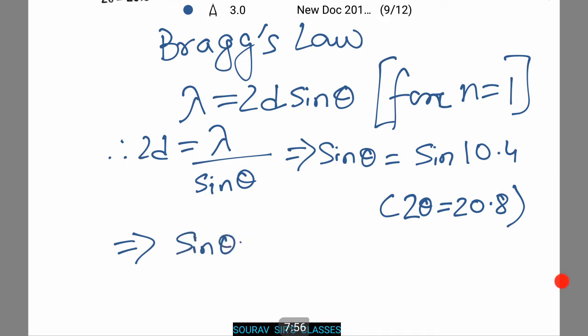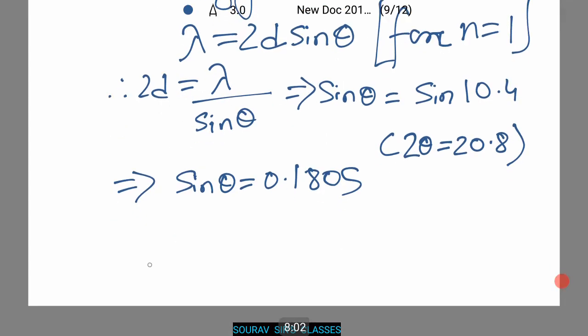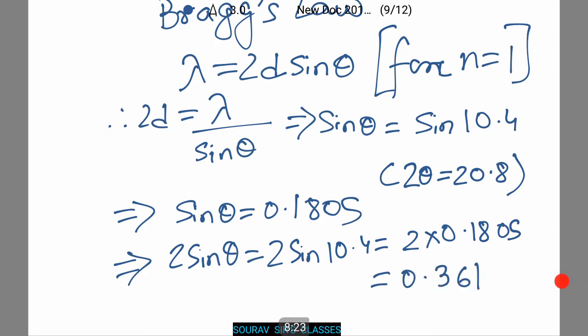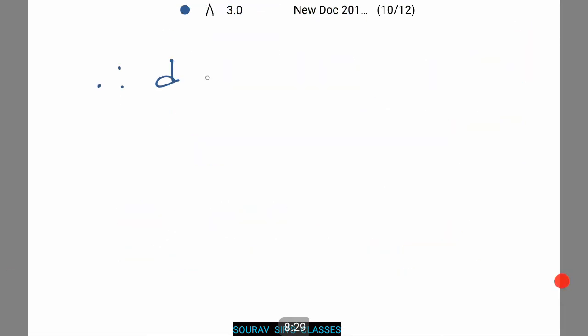Sin theta equals 0.1805. This we have calculated using our calculator. Now 2 sin theta equals 2 sin 10.4 which equals 2 times 0.1805. That is 0.361. Now we will calculate d.